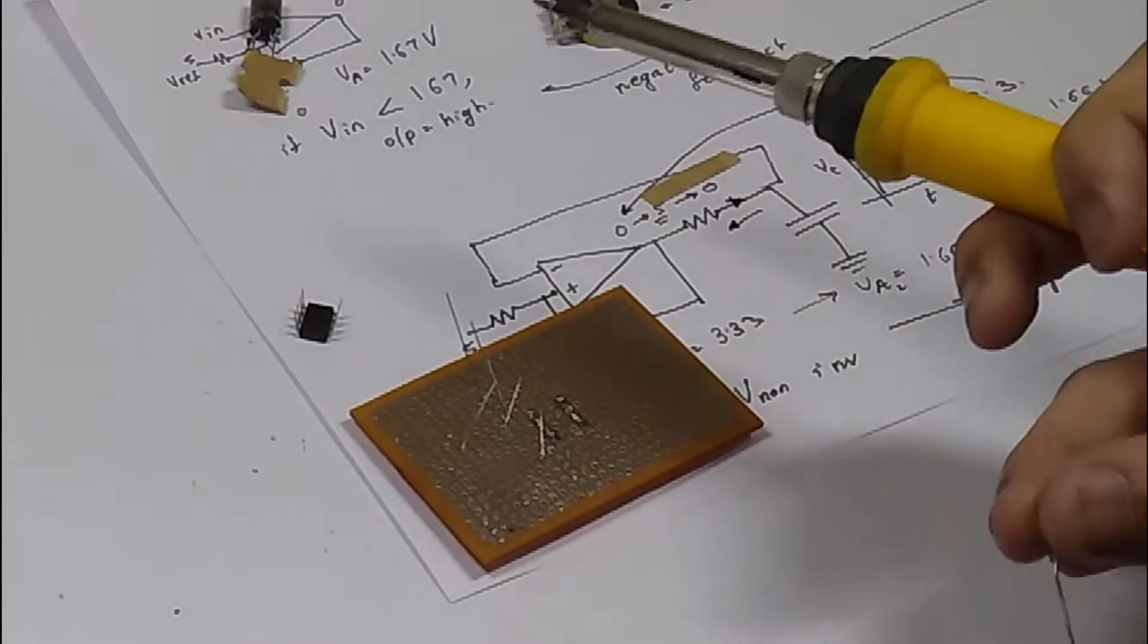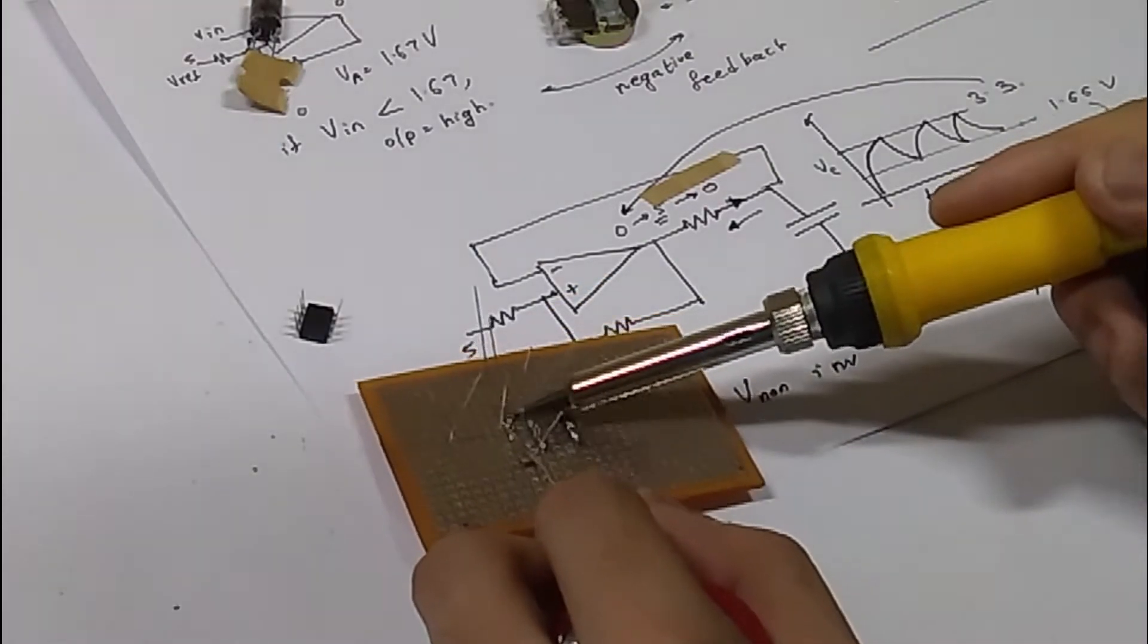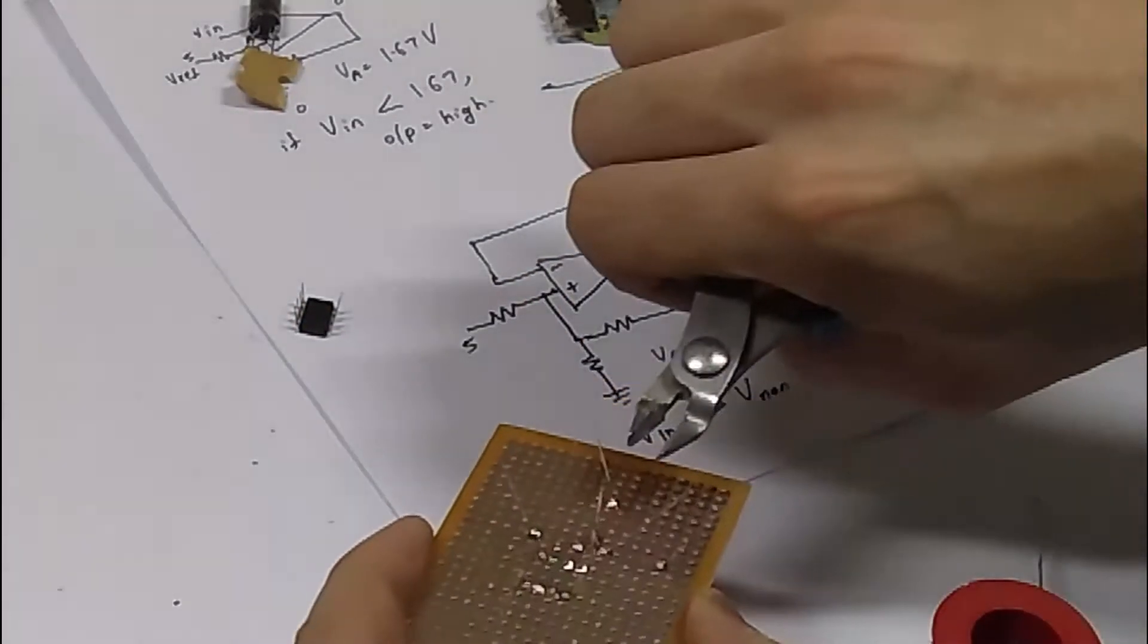So, here are the extremely small number of components required, details on my Instructables page. I started soldering them according to the designed schematic.